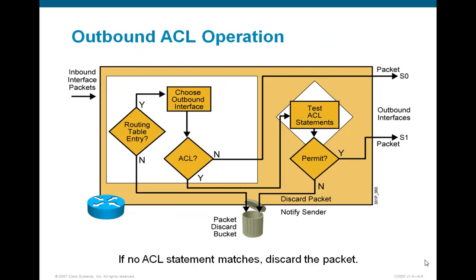This slide describes how the ACL operation works. In traffic filtering, we have two types of filtering: we can filter traffic inbound, meaning incoming traffic, or outbound, meaning outgoing traffic filtering. Based on this slide, we are looking at how the router processes outgoing or outbound traffic operation.